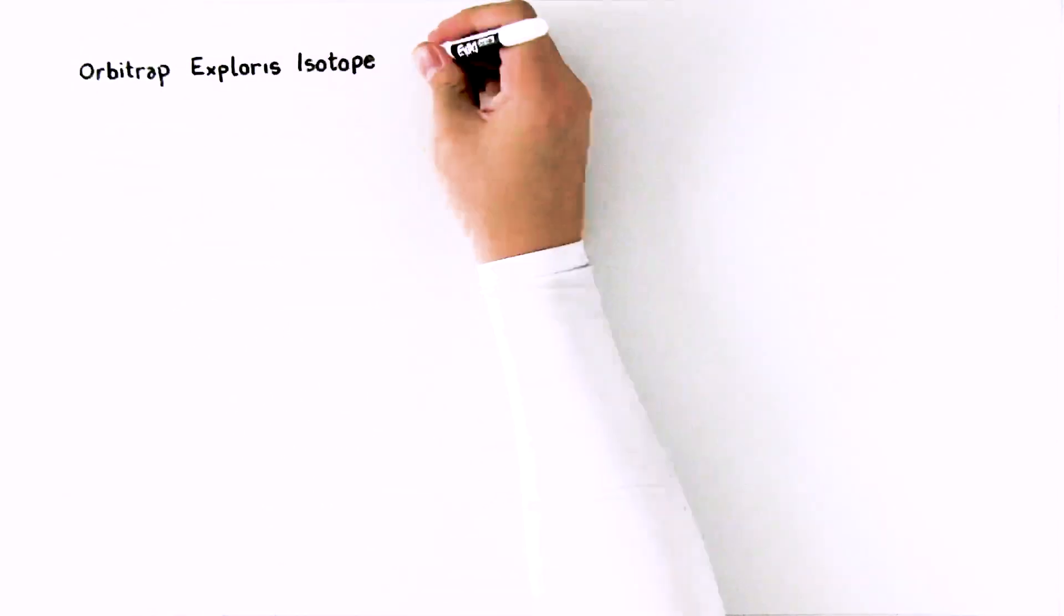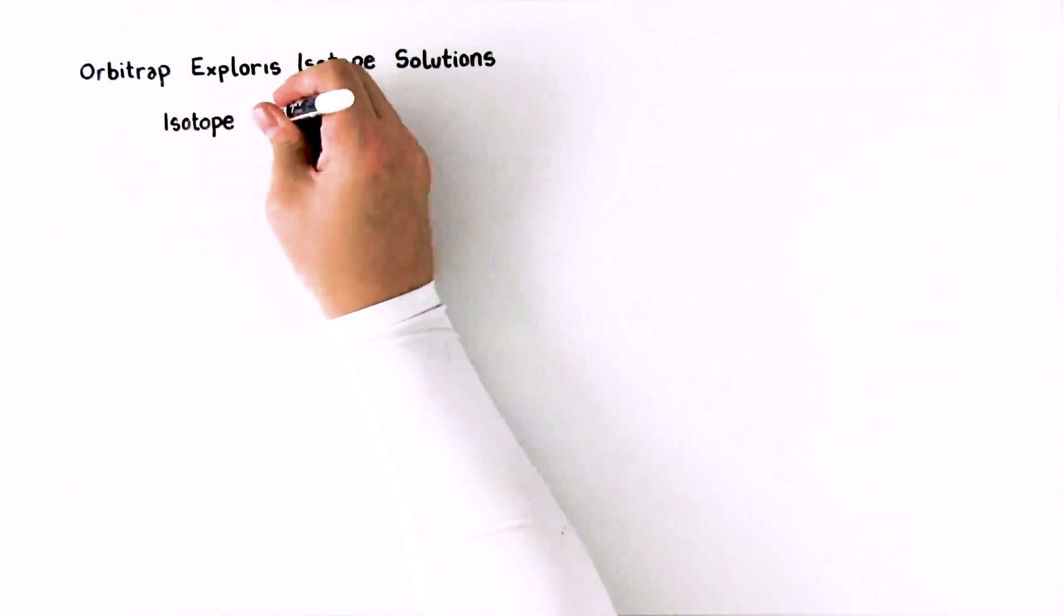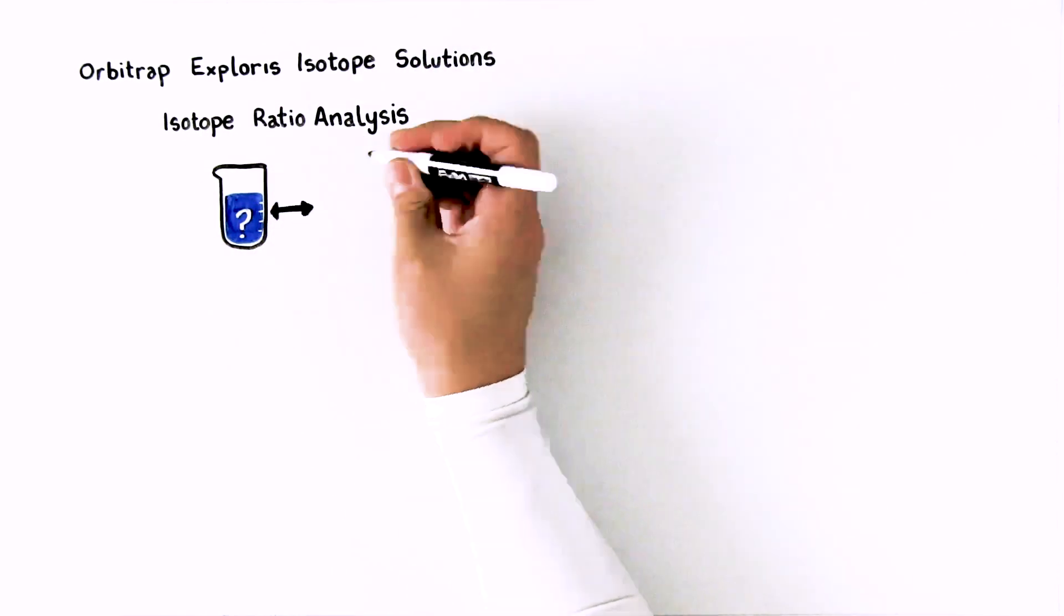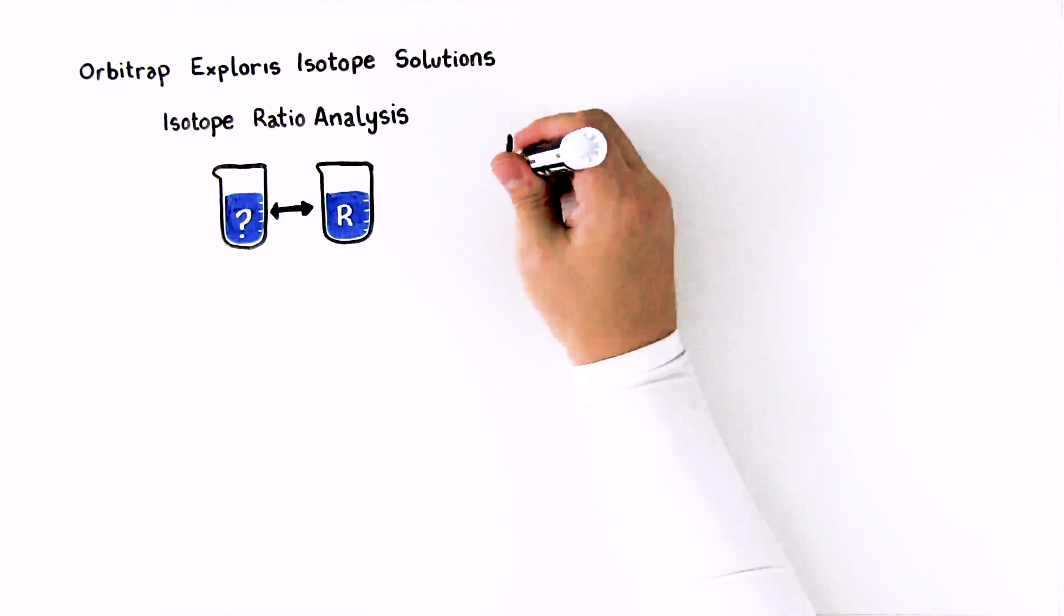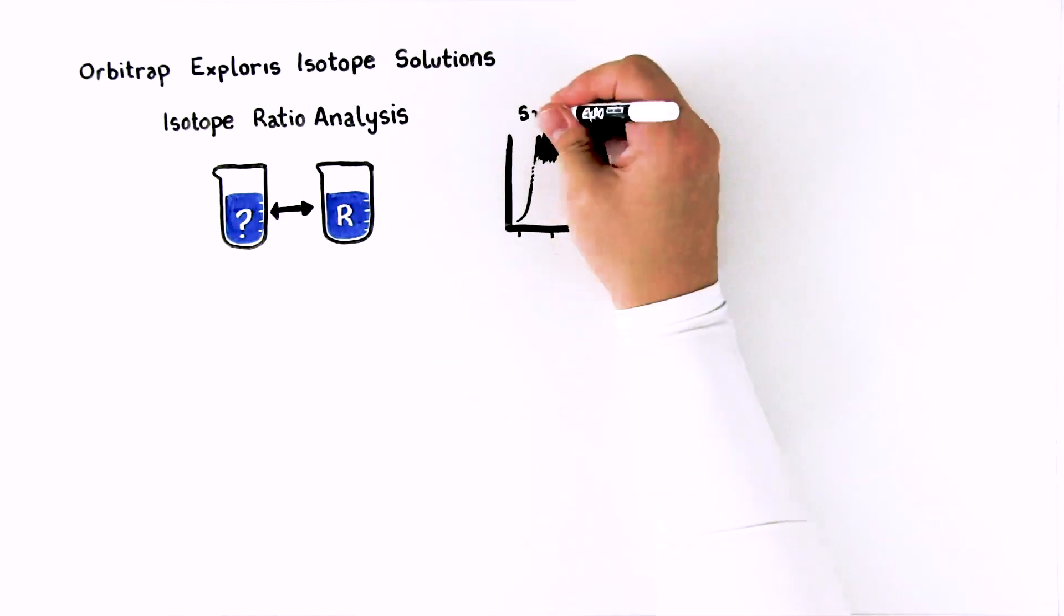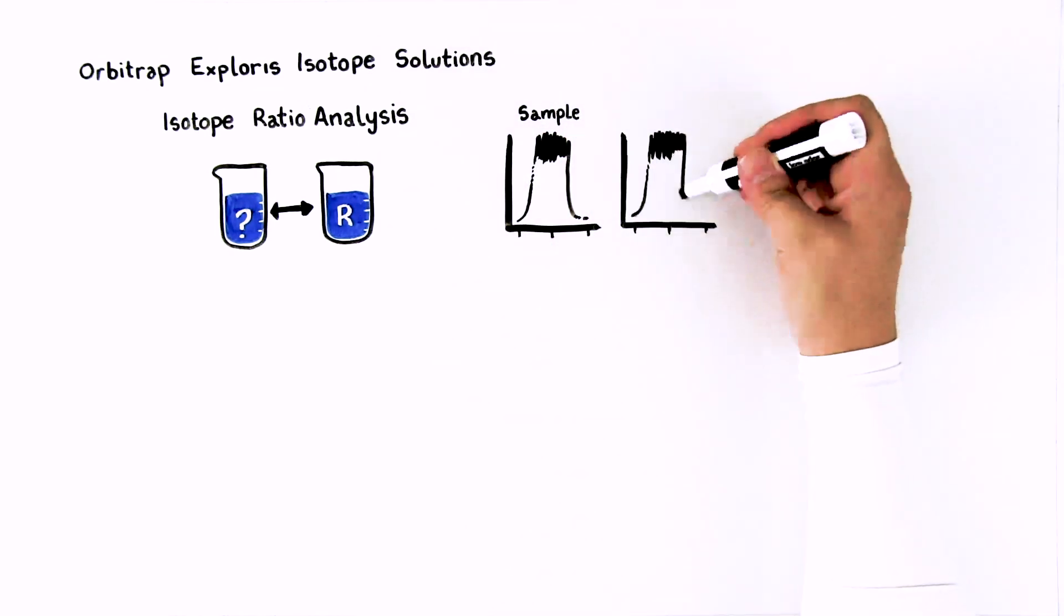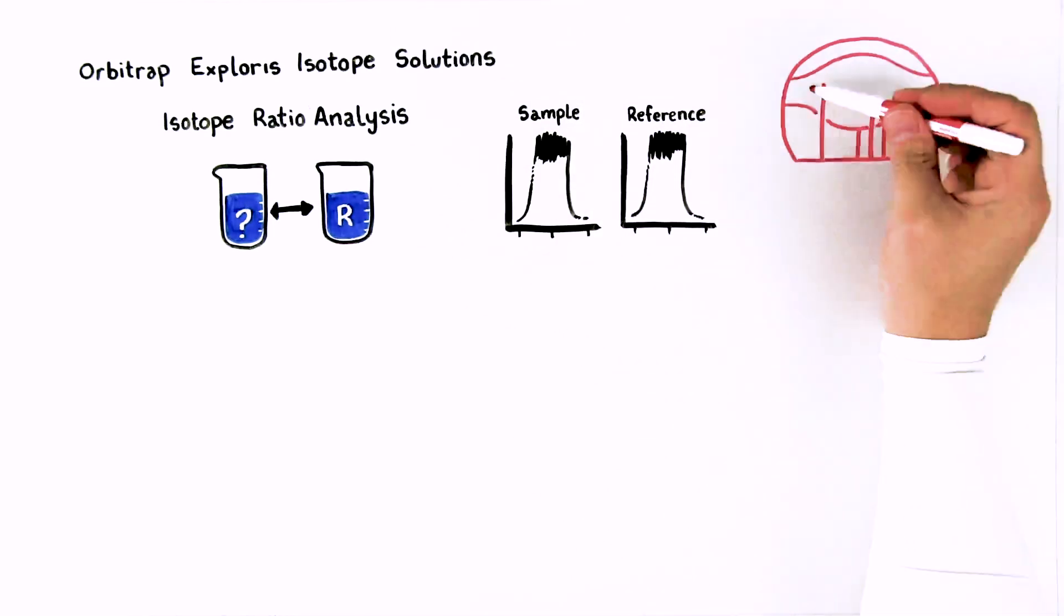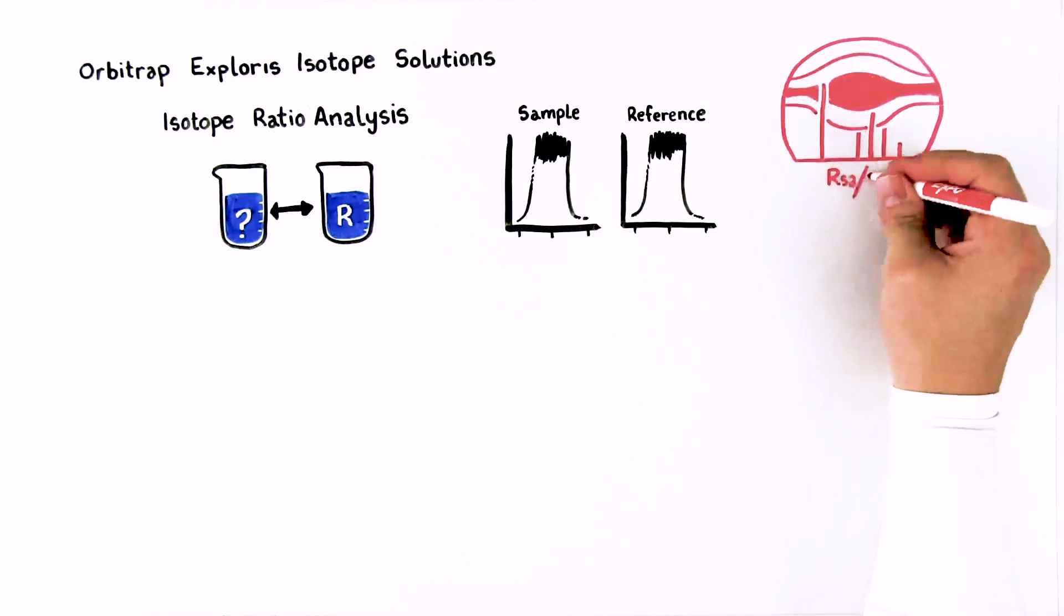Orbitrap Explorers Isotope Solutions has been specifically developed for isotope ratio analysis, including methodology for sample reference comparison. This enables isotope ratios of unknown samples to be analyzed relative to a reference, ensuring accuracy of the isotope ratio results, reported relative to international standards.